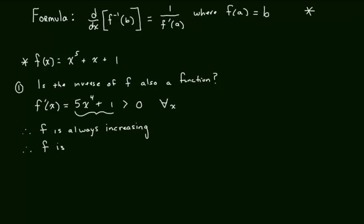I'm going to use a more fancy version of 'passes the horizontal line test' — we're going to say that f is one-to-one. Please note that is the fancy way of saying passes the horizontal line test. To be a function, every input can have only one output. But to be one-to-one, every output also has only one input. So, f is always increasing, therefore f is one-to-one, and therefore the inverse of f is also a function.